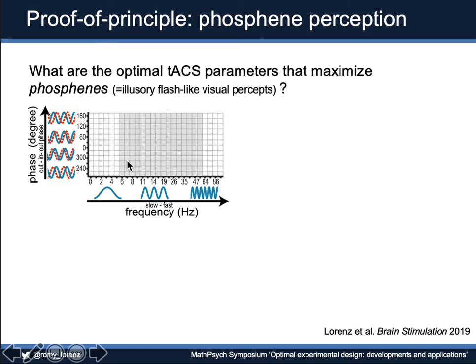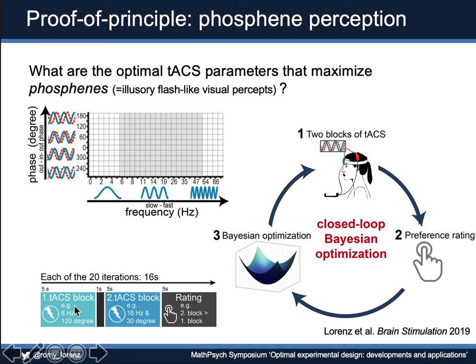We used this as a proof-of-principle to show the method can work. We spanned a huge parameter space consisting of different frequencies and phases, searched through it, and asked subjects: in each iteration, we administered two blocks and asked where they perceived the phosphenes stronger — highlighting that Bayesian optimization can be used for binary judgment ratings. The algorithm identified the area with the highest phosphene perception. As a proof-of-principle, the technique works, though it would be more interesting to optimize based on behavioral measures like reaction time or accuracy, or even neural data such as restoring a certain connectivity pattern in the brain.